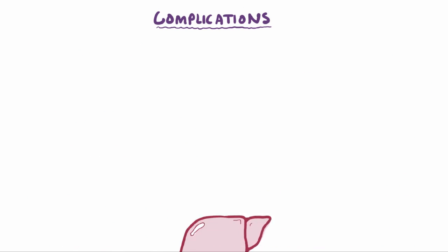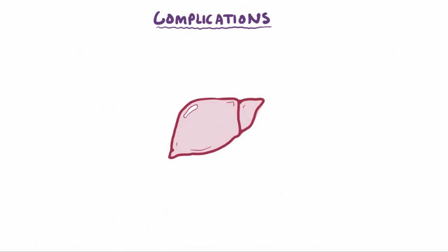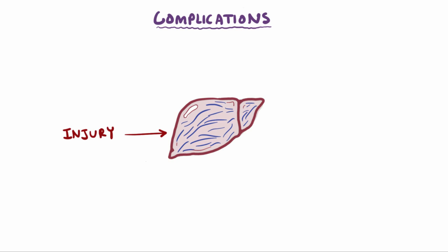So at this point, it's pretty clear that when your hepatocytes get injured to the point of no return and start to form permanent scar tissue, and your liver becomes cirrhotic, there can be a lot of potential complications that can follow.